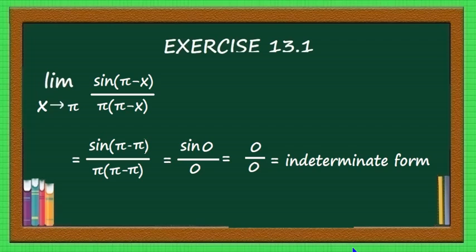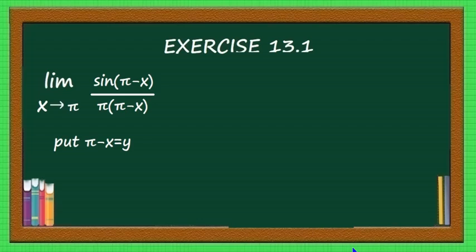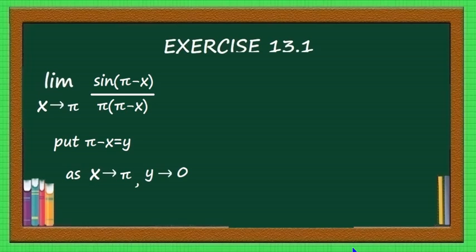Once it is in indeterminate form, you have to use another technique to find the limit. In this problem, put π - x equal to y. As x tends to π, y tends to 0. Put x equal to π and y becomes 0, confirming that as x tends to π, y tends to 0.